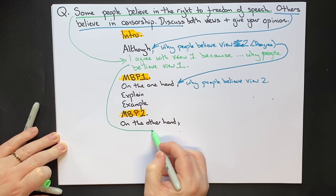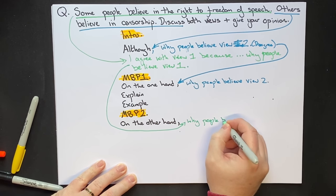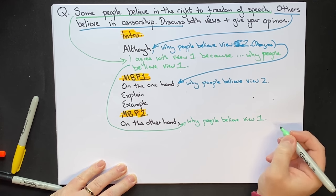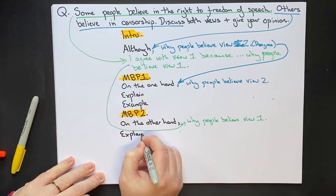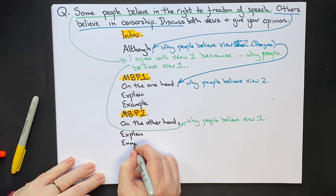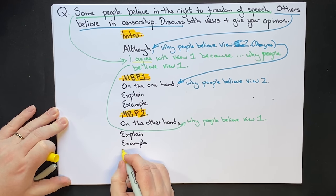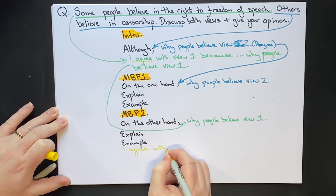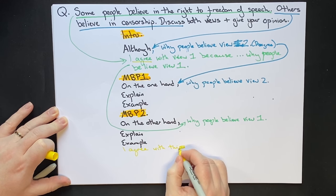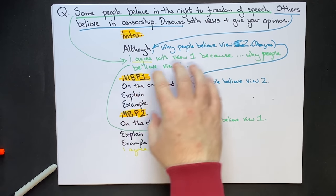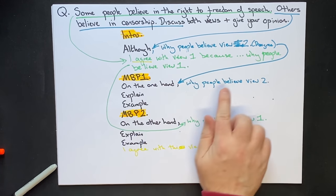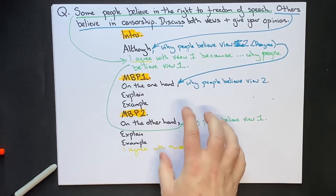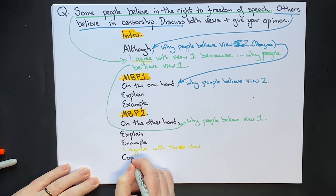Then main body paragraph two: we simply take this from the introduction — why people believe view one — explain why people believe it, give an example, and then include our opinion: I agree with this view. So in our main body we've discussed view two, discussed view one, and given our opinion — discuss both views and give your opinion.